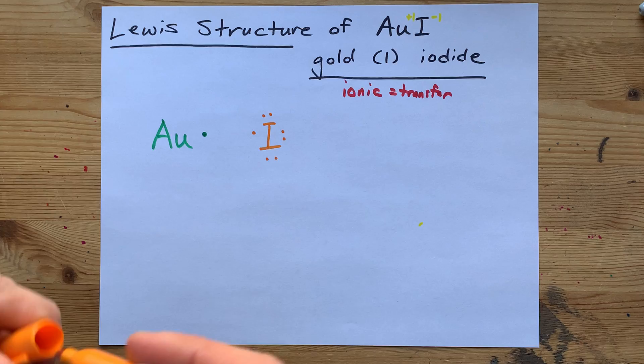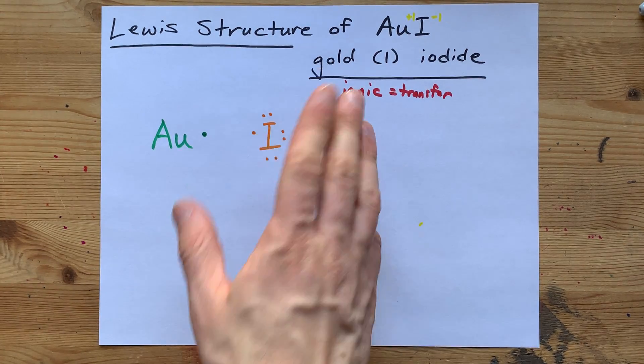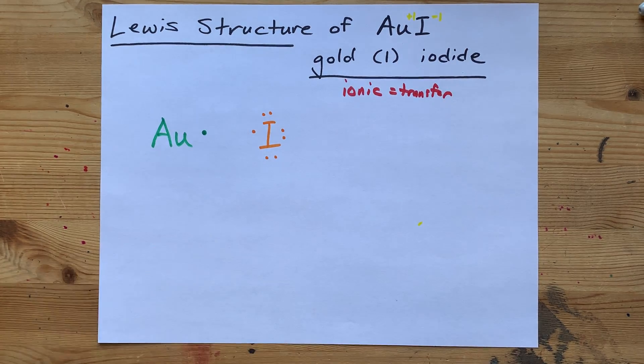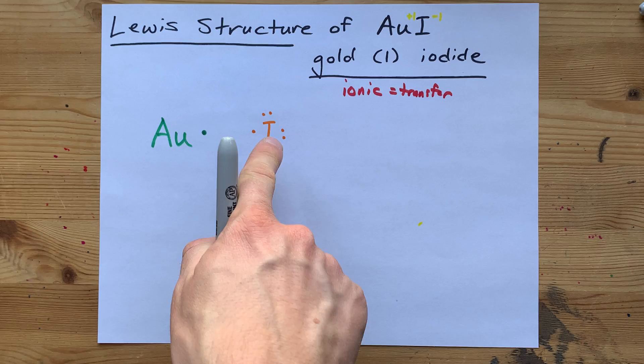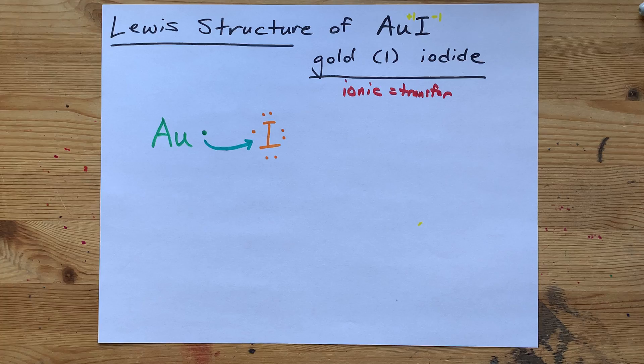Now, iodine, the non-metal, wants a complete octet of 8 electrons in its outer shell. Where is it going to get the extra 1 electron to complete its octet? The answer is, a metal will willingly give its electron up.